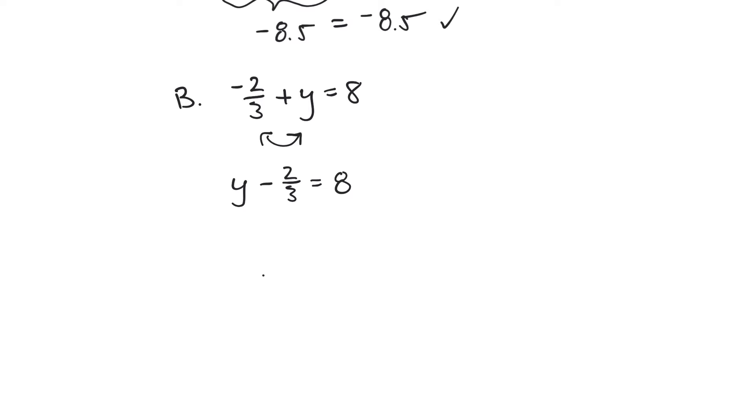Now, if I want to solve for y, I have to move the 2/3 to the other side of the equal sign. But in doing so, it becomes, instead of minus 2/3, it becomes a plus 2/3. And I can now erase this part. So y is equal to 8 plus 2/3, which, wow, that's pretty easy. That is 8 and 2/3. Super easy on that one.